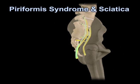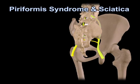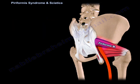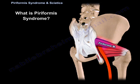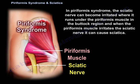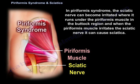Piriformis syndrome is a hidden cause of sciatica. In piriformis syndrome, the sciatic nerve can become irritated where it runs under the piriformis muscle in the buttock region. When the piriformis muscle irritates the sciatic nerve, it can cause sciatica.